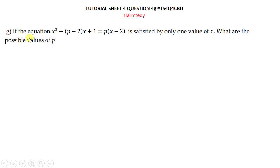So this question says if the equation x squared minus p minus 2x plus 1 equals p times x minus 2 is satisfied by only one value of x, what are the possible values of p? So here what they are simply talking about is that you can only have, in other words, what we already know about the roots of equations, of quadratic equations. You can only have one value of x when you have equal roots. So meaning the discriminant is equal to 0.